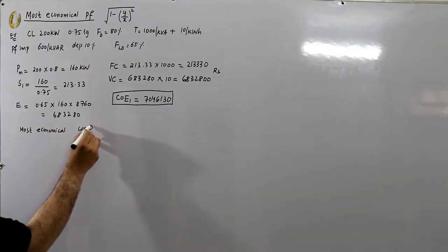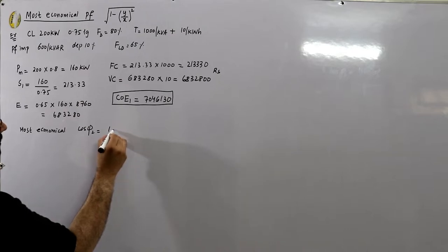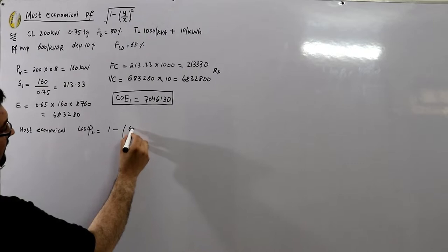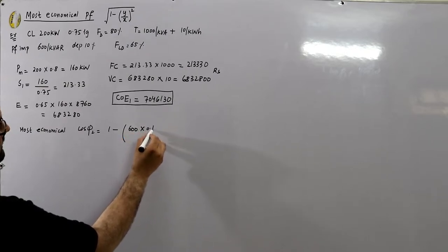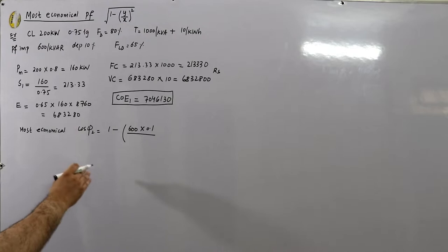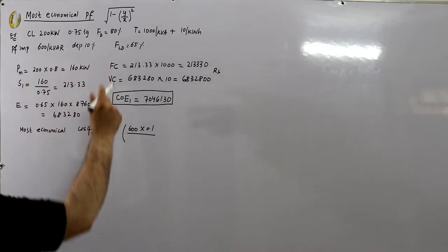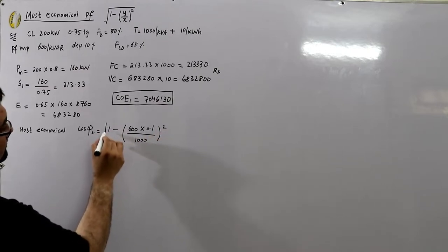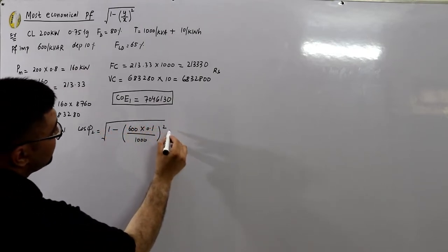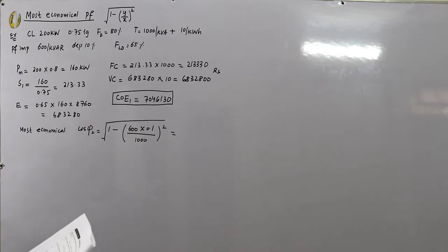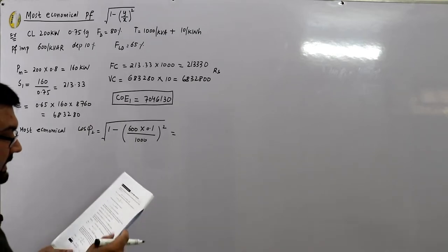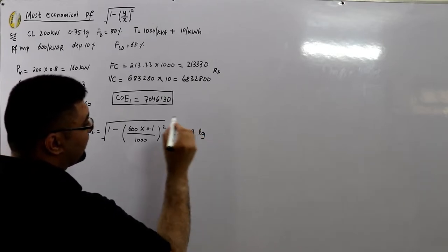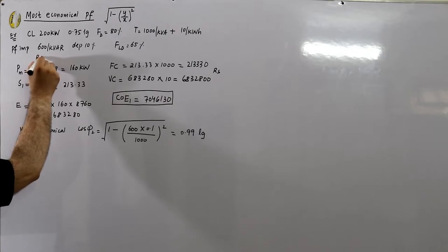Now determine the most economical power factor. The formula gives cos φ₂ = square root of 1 minus (y/x)², where y is the cost per kVAr which is 600 with 10% depreciation, and x is the tariff per kVA which is 1,000. This gives the most economical power factor as 0.99 lagging.